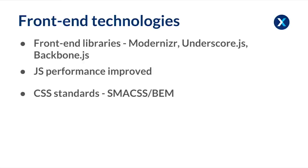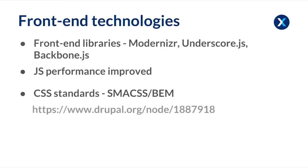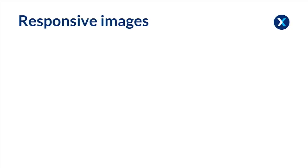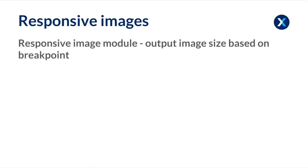There's also been some CSS standards introduced. In Drupal 7 the CSS isn't so clean, but there's been a lot of work put into implementing the SMACSS and BEM methodology, and I do recommend you go and check out the link which specifies what these rules are. Also, responsive images have been introduced in core using the responsive image module, which allows you to specify what image size you want to output based on the breakpoint — similar to the picture element.